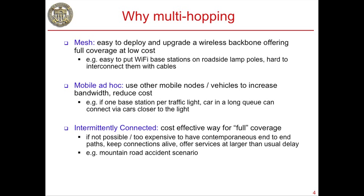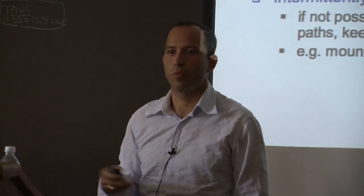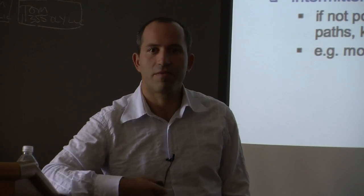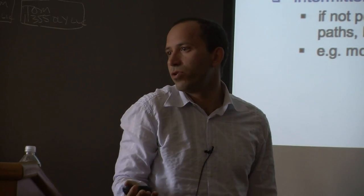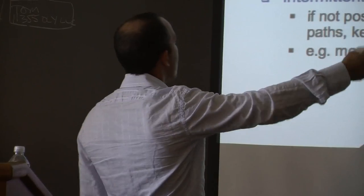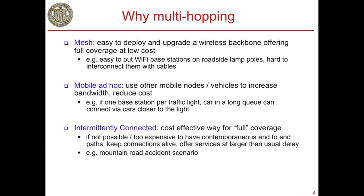Mobile ad hoc is needed when you have no direct communication to a roadside base station. Imagine sitting in a car in a big city at a traffic light with a long queue — if intersections are far apart, you may not have enough power to reach the traffic light base station. But all those idle cars in front of you can serve as relay hops, letting you do multi-hopping through the queue.